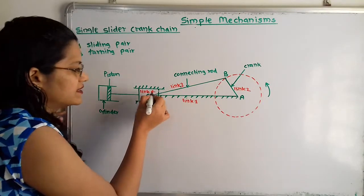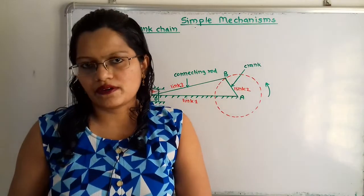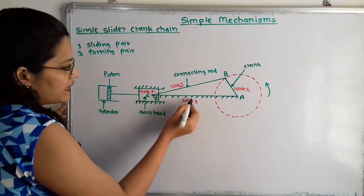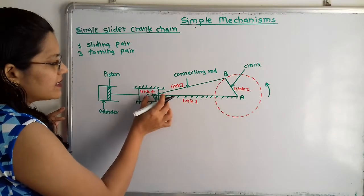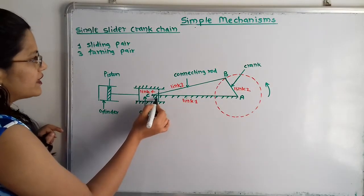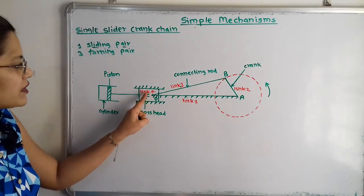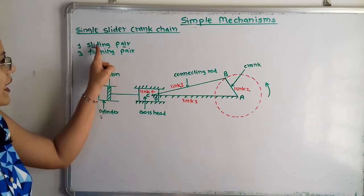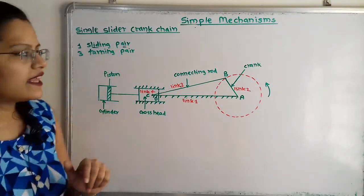Link 3 and link 4 are connected by point C, and this point C is also a turning pair. But when link 4 — the crosshead — and fixed link 1 are connected, they are connected by point D, and this point D is the sliding pair. The connection between link 4 and link 1 is known as the sliding pair; all others are turning pairs. That is why it is known as the single slider crank chain.